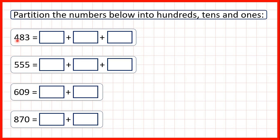So first we have 483. This 4 is in our hundreds, so it represents 400. This 8 is in our tens, so it stands for 80, and this 3 in our ones just stands for 3.